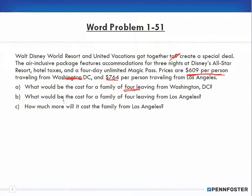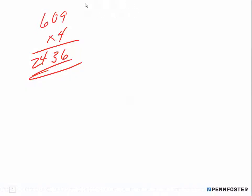Part B: what would be the cost of a family of four leaving from Los Angeles? Basically the same kind of math. $764 times 4, that's 16 carry my 1, 24, 25 carry my 2, 7 times 4 is 28 and 2 is 30, so $3056 going from Los Angeles.